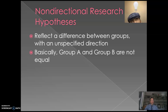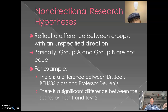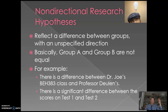The simple version is: Group A and Group B are not equal. For example, I used to teach a stats class at California Baptist University called BEH 383, and I would argue there was a difference between my section and my colleague Professor Doulan's section. Our classes were different — not better or worse — simply different, because our teaching styles were different. This is a non-directional research hypothesis: different, not better or worse.